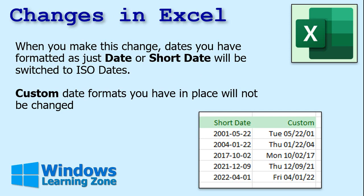How does this stuff affect Excel and Access? When you make this change, the dates you already have in your spreadsheet that are formatted as standard or short dates will be switched to the ISO dates. But any custom date formats you have in place will not be changed. You can see that this was just a standard date and they all switched automatically.